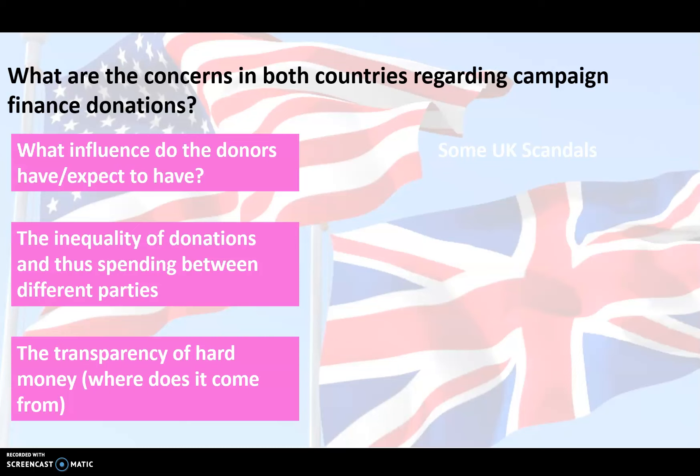Thirdly, which is kind of connected to the first point, is transparency — where does the money come from? There's a slight difference from that first point about influence; this is about the source of the money. Is the source from within the country or is it money coming from outside the country? Both countries have passed laws which ban money coming from outside their country, so all money received for political activity has to come from within either the UK or the United States.